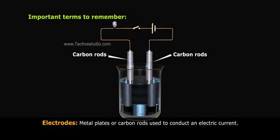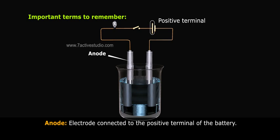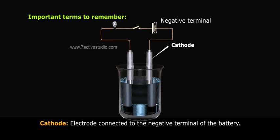Electrodes: metal plates or carbon rods used to conduct an electric current. Anode: electrode connected to the positive terminal of the battery. Cathode: electrode connected to the negative terminal of the battery.